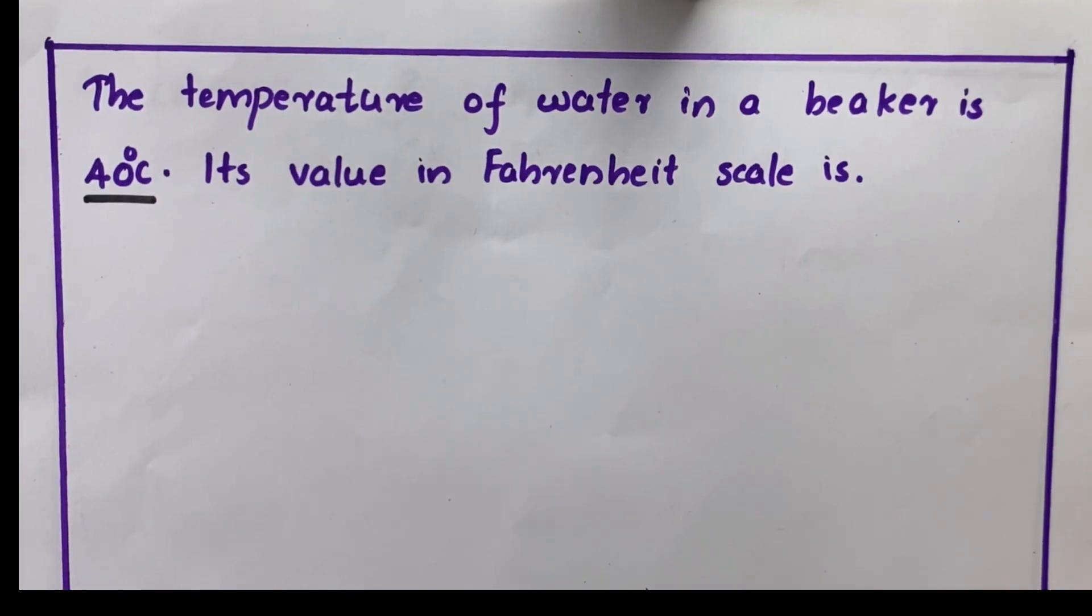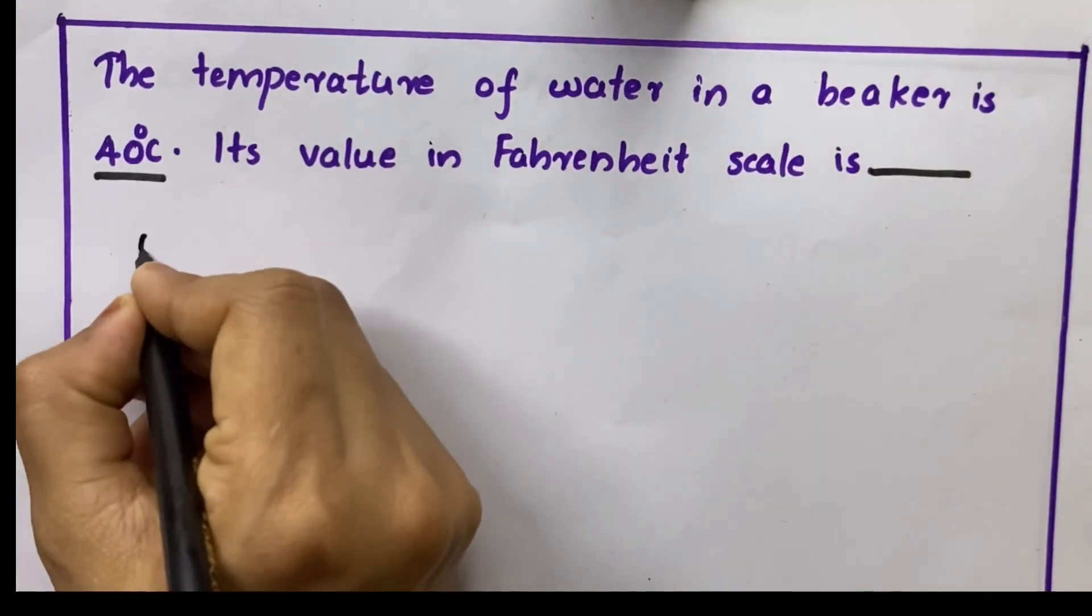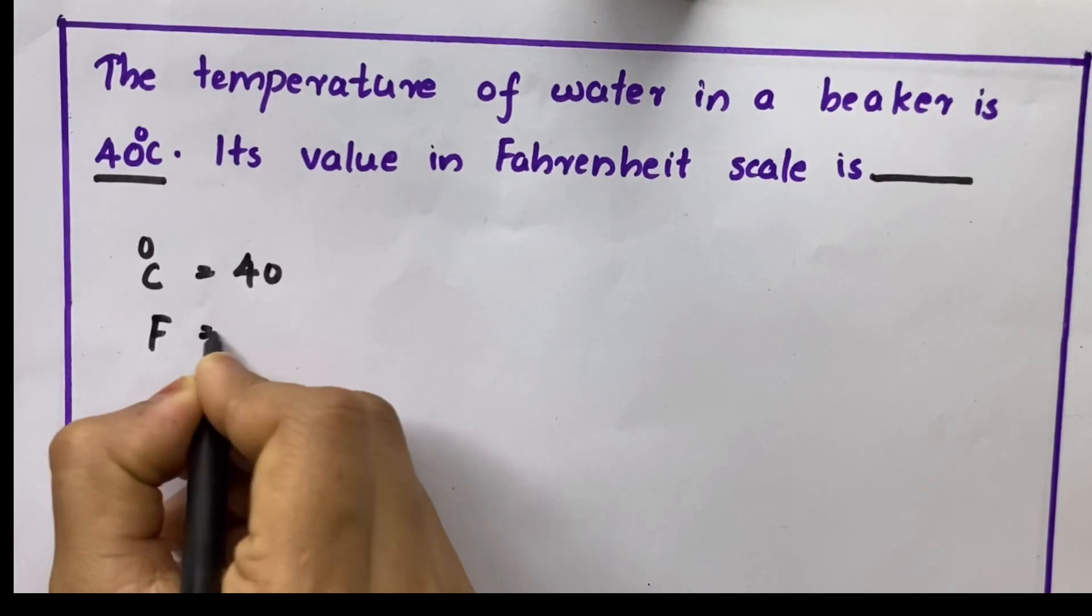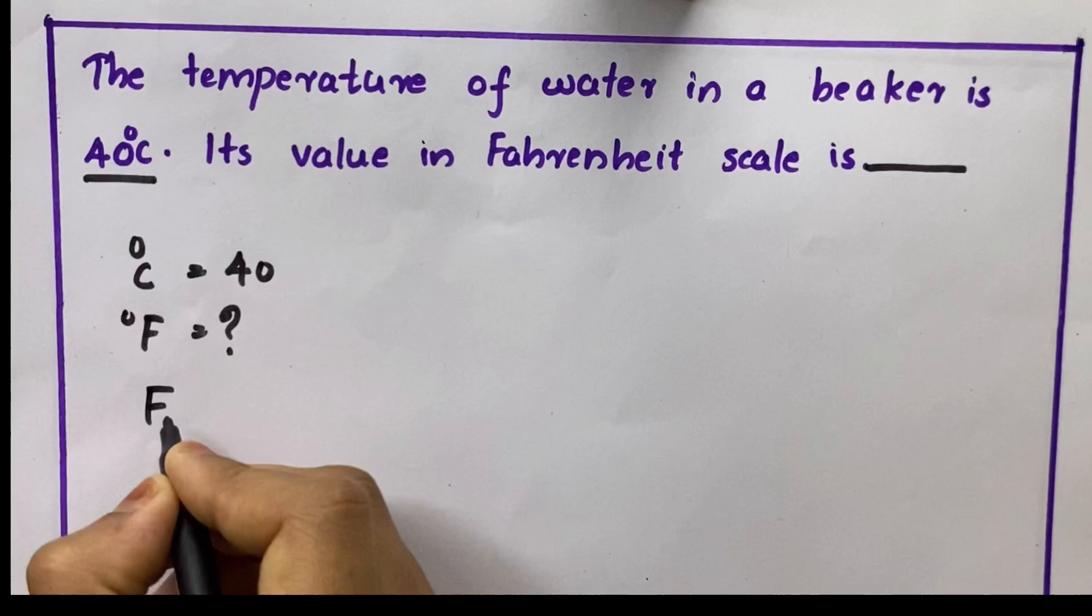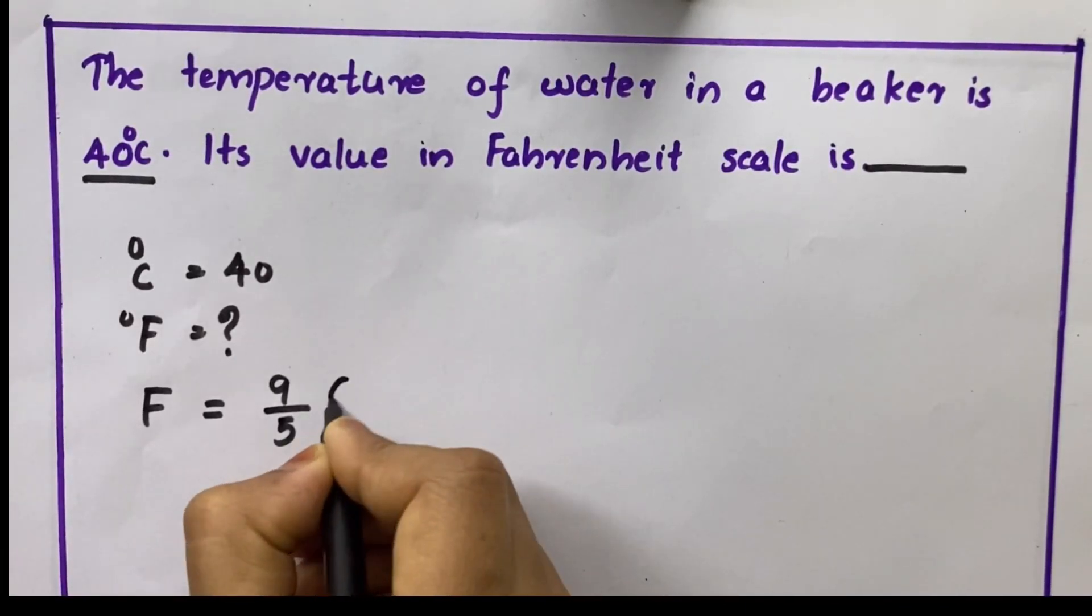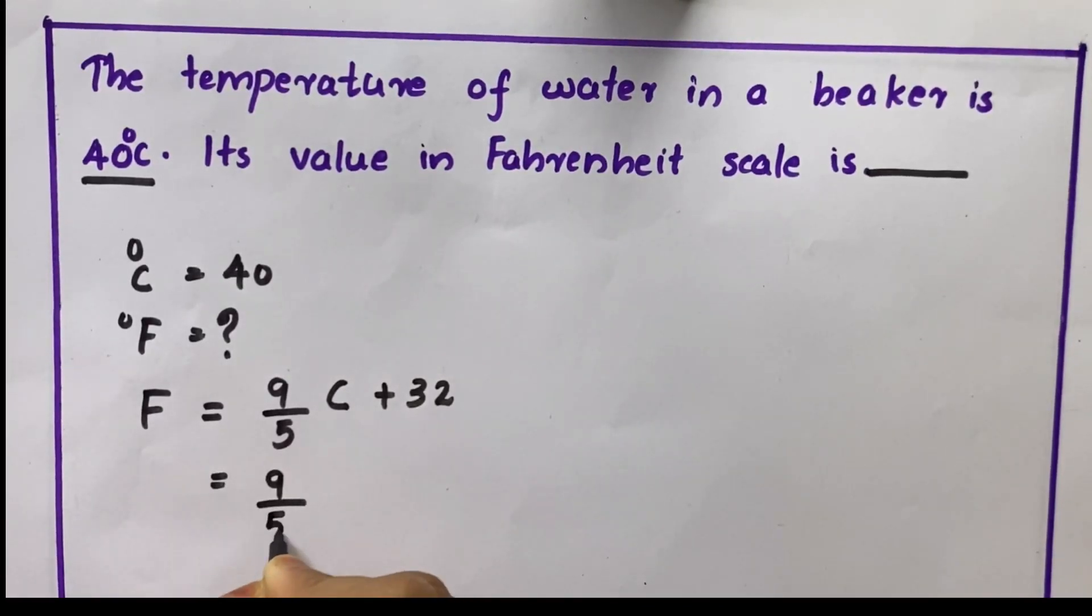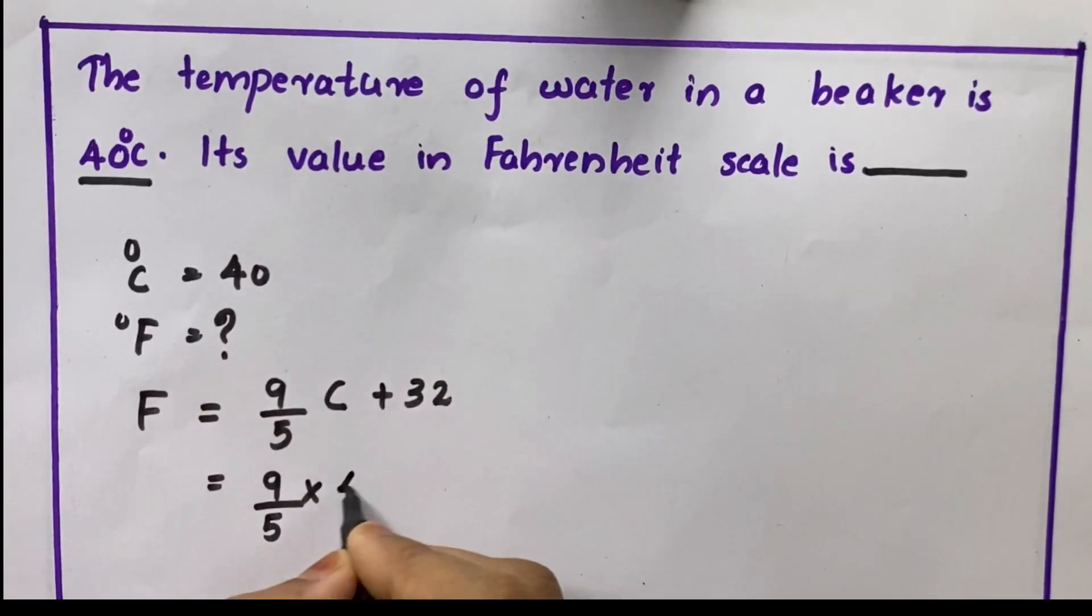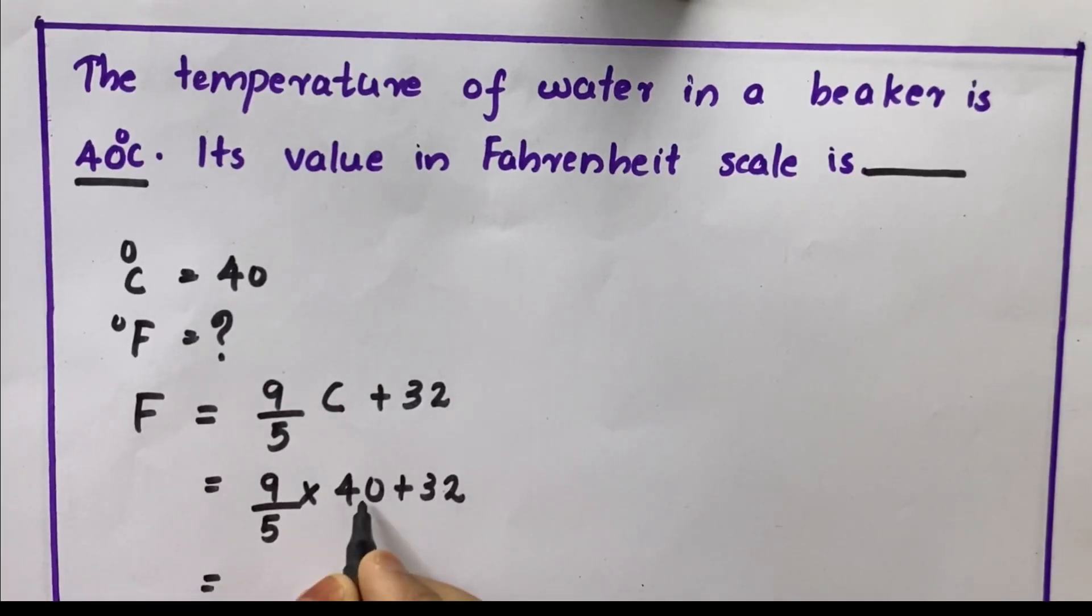Its value in Fahrenheit scale is what we have to calculate. So in degree Celsius we got 40, we have to calculate this in degree Fahrenheit. What is the equation for that? F equals 9 by 5 C plus 32. That equals 9 by 5 into - we have to apply the value of C here, that is 40 - plus 32.